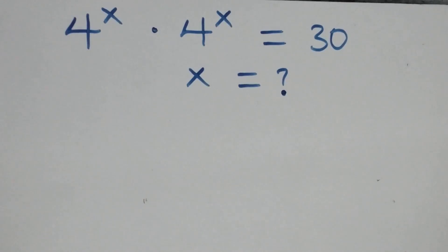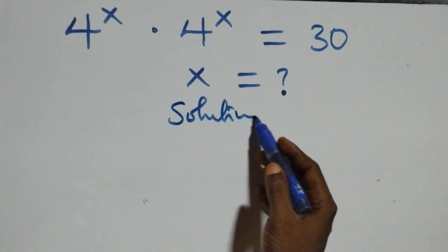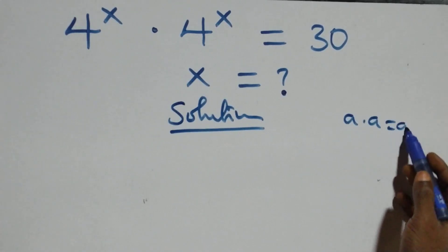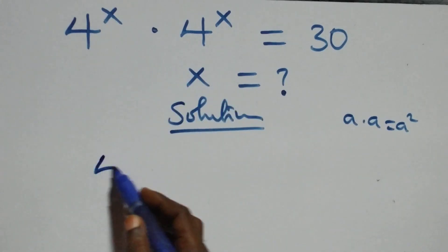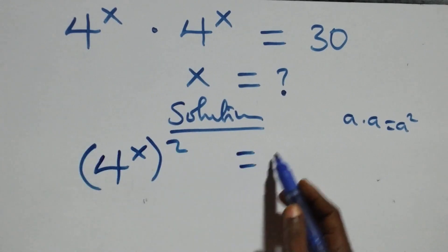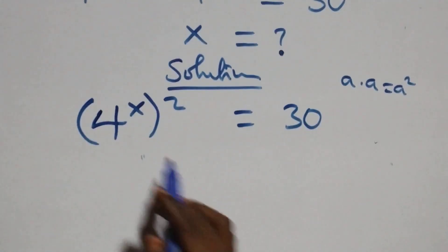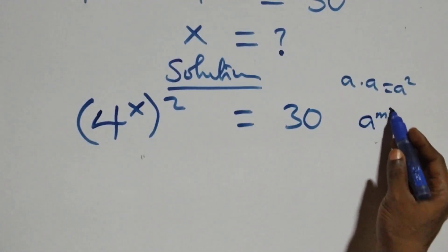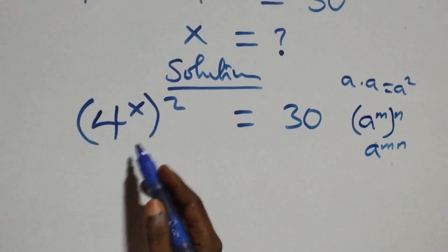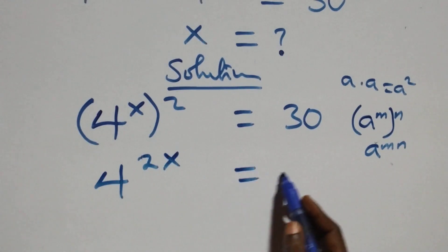We have one part of this exponential equation solution. This follows when we have a times a, which we can write as a squared. Multiplying here, we have four raised to power x, all squared. This equals thirty on this side. This also follows since a raised to power m, raised to power n, is the same as a raised to power m·n — so the powers multiply, giving us four raised to power two x equals thirty.